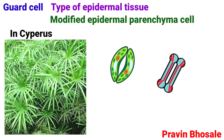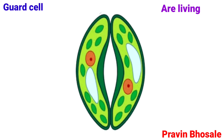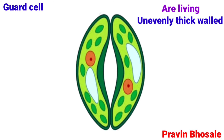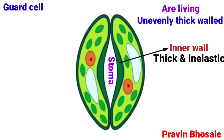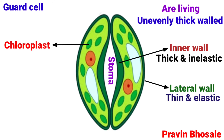In cypress, both kidney and dumbbell-shaped guard cells are present. These guard cells are living nucleated cells with unevenly thick walls. The wall facing the stoma is thick and inelastic, while its lateral wall is thin and elastic. Guard cells contain few chloroplasts which are capable of photosynthesis.